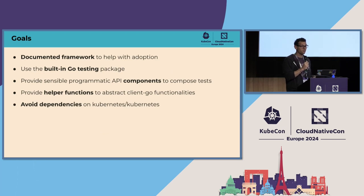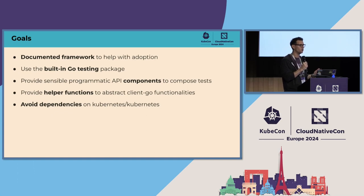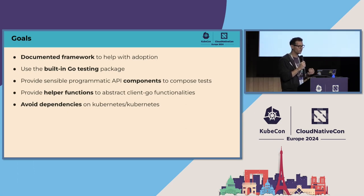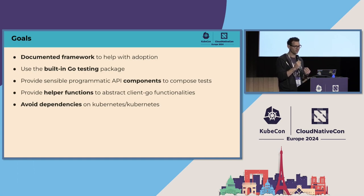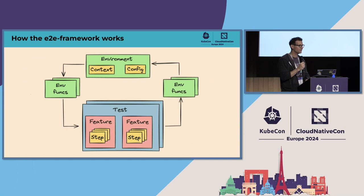Now we have the end-to-end framework, which is an official SIG project with the goal to provide a documented approach for end-to-end testing — an official tool you can use, as close as possible to the Go test package you use every day, with components to help you build your test suite, helper functions for interacting with Kubernetes clusters, and especially avoiding all dependencies on the Kubernetes codebase itself.